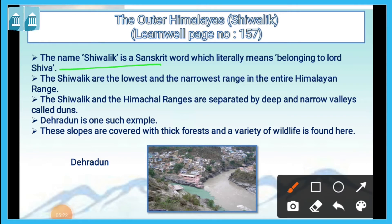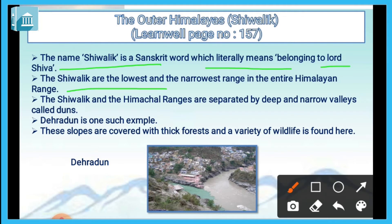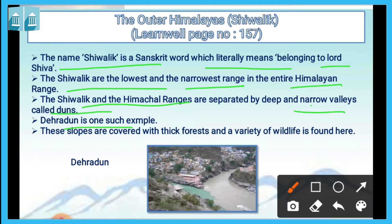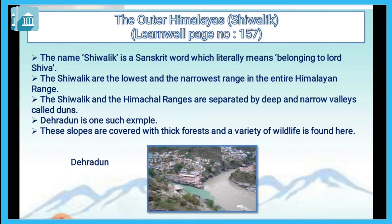The name Shivalik is a Sanskrit word which literally means belonging to Lord Shiva. The Shivalik are the lowest and the narrowest range in the entire Himalayan range. The Shivalik and the Himachal ranges are separated by deep and narrow valleys called dunes. Dehradun is one such example. These slopes are covered with thick forest and a variety of wildlife is found here.